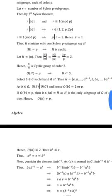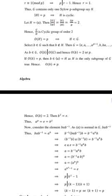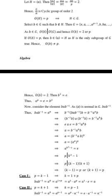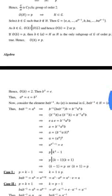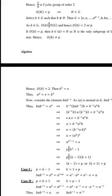The order of H is P, and H is a subgroup of G. Select B belonging to G such that B does not belong to H. Then G equals {E, A, A², ..., A^(P-1), B, BA, ..., BA^(P-1)}. Since B belongs to G, the order of B divides the order of G. Hence the order of B equals 1, 2, P, or 2P. If the order of B equals P, then B belongs to the cyclic group generated by A, which equals H, but H is the only subgroup of G of order P — contradiction. Hence the order of B does not equal P. Therefore the order of B equals 2, so B² equals E. Hence A^P equals E equals B².